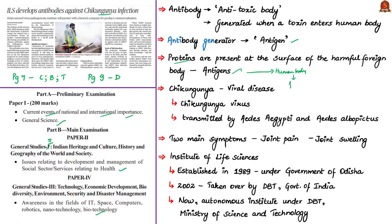If the human body cannot produce antibodies against a particular virus, the person may get infected and the virus may be fatal. Researchers in biotechnology therefore develop antibodies in the lab, which are then administered to human bodies to safeguard against dangerous viruses.